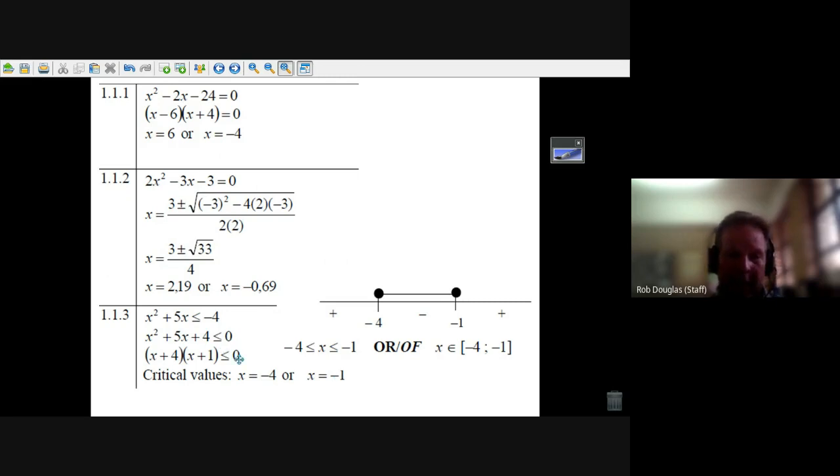Now you want to find out where it goes negative. Well, if you pick something just to the right of minus 1, like 0, you'll see 0 plus 4 times 0 plus 1—that's not less than 0, it's positive. But pick something in between, like minus 2. Minus 2 plus 4 is 2, minus 2 plus 1 is minus 1, 2 times that's a negative. In fact, pick anything in the region between minus 1 and minus 4 and you'll get zero or a negative number.